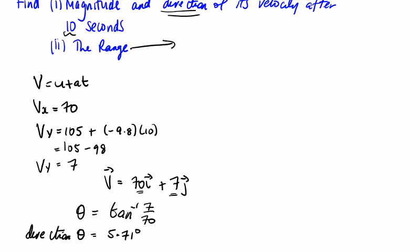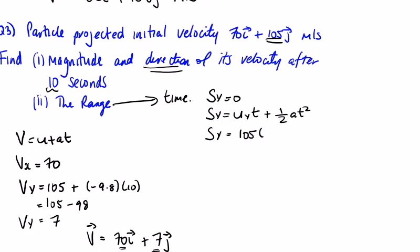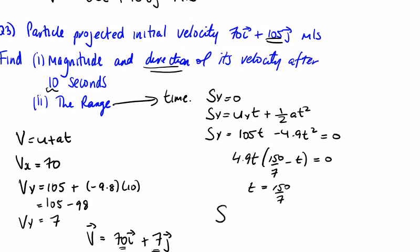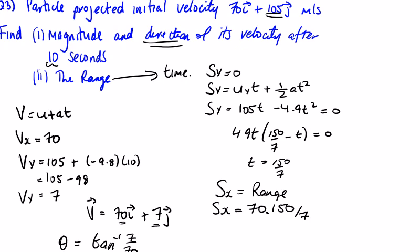For the range: s_y = 0, so 105t − 4.9t² = 0. Factorising: 4.9t(150/7 − t) = 0, giving t = 150/7. Range: s_x = 70 × 150/7 = 1500 meters.